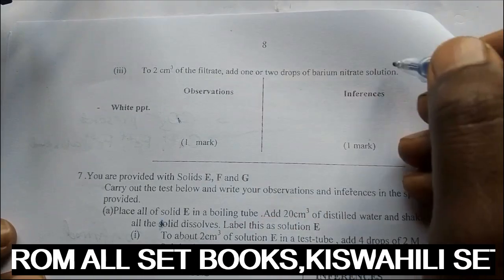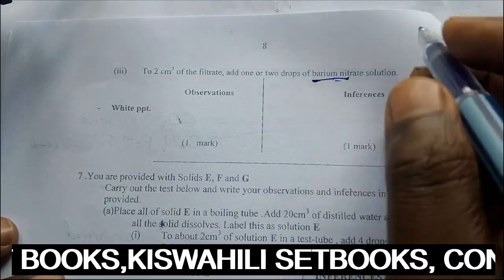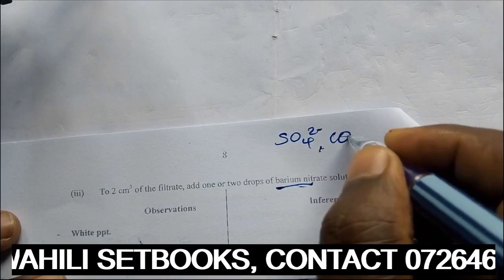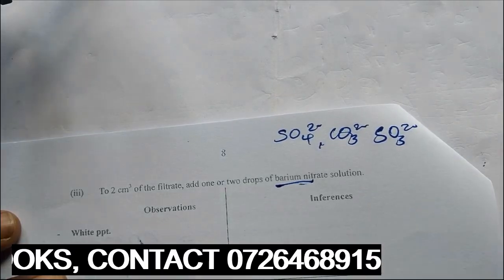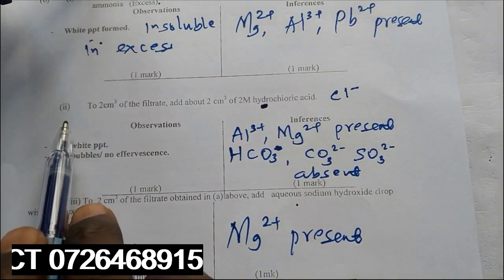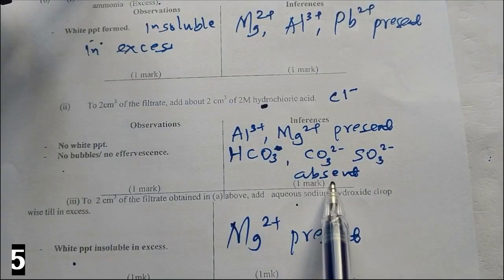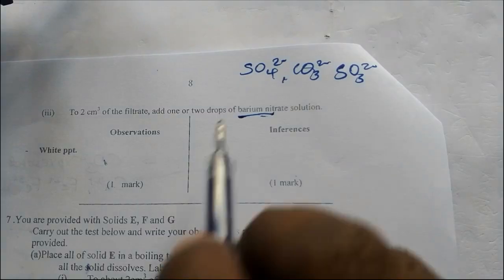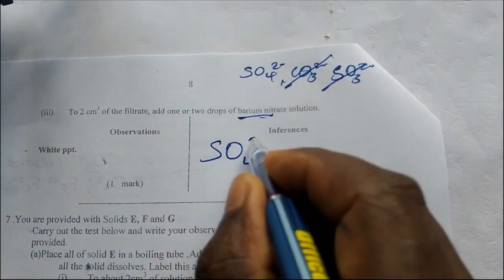A white PPT is formed. So barium nitrate, barium will form a white precipitate with the sulfate, with the carbonate, and the sulfite. But from our previous Roman 2, we said the carbonate, the sulfite are absent. So there is no way we are going to include this and this because we said it is absent. So out of these three, we are not going to include this, then it means the sulfate is present.